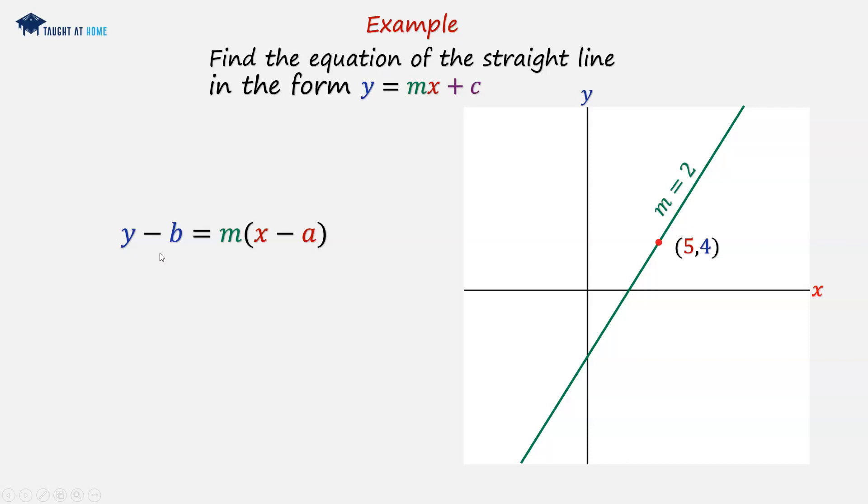So we've got y minus b. We can enter the value for b, which here is 4, so we can put 4 into the equation. And we've also got a, which is 5, so we can put a into the equation there. We've also got m. We can take m and put this into the equation.